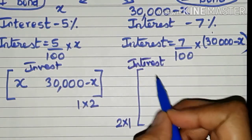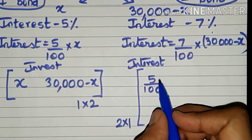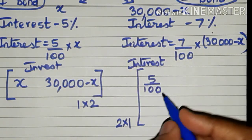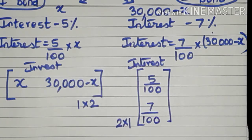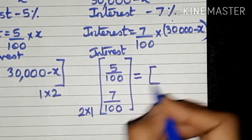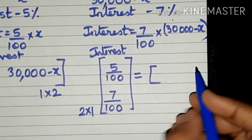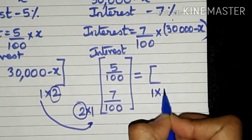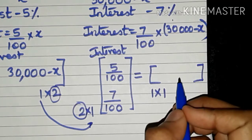The first row first column entry of the interest matrix is 5/100, since the first bond pays 5% interest. The second row first column entry is 7/100, the interest for the second bond. When these two matrices are multiplied, the inner dimensions cancel and the resulting matrix is of order 1 by 1 — only one entry — which is nothing but the total annual interest.